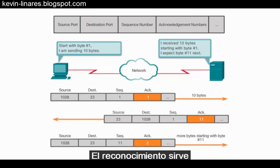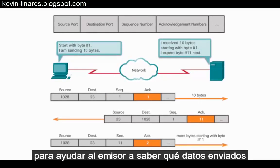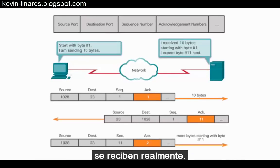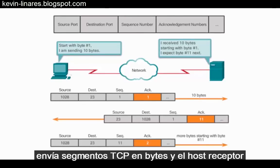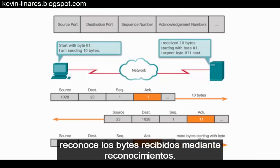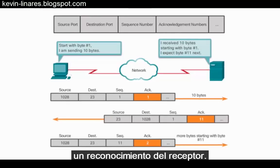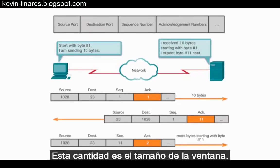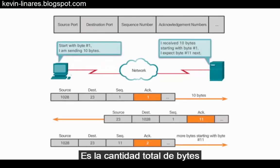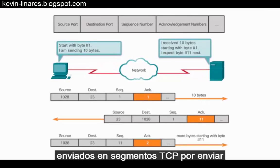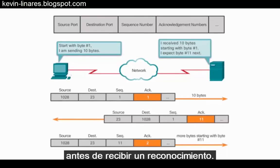Acknowledgements come into play by helping the sender know that the data being sent is actually being received. The sending host sends TCP segments in bytes and the receiving host acknowledges bytes received by sending acknowledgements. There is a limit to the amount of data the sending host can send before it receives an acknowledgement from the receiver. This amount is called the window size. The window size is the total number of bytes sent in TCP segments that can be sent before receiving an acknowledgement.